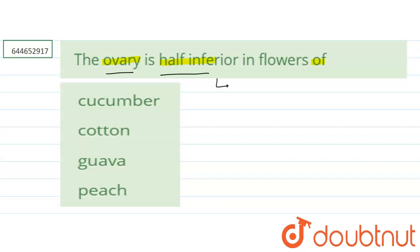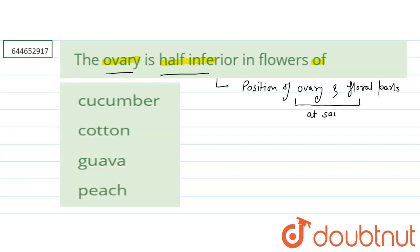This statement means that the position of the ovary in a flower and the other floral parts are present at the same level. This type of ovary is considered as half inferior, also known as a perigynous ovary.